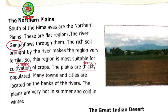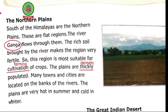It means many people live in the Northern Plains. Many towns and cities are located on the banks of the rivers. The Plains are very hot in summer and cold in winter. In which natural region is your state located? Our state is located in the Northern Plains. There are no hills. Name the rivers that flow through the Northern Plains — the Ganga, the Satluj, and the Brahmaputra. What is the climate of the Northern Plains? The Northern Plains are very hot in summer and very cold in winter.